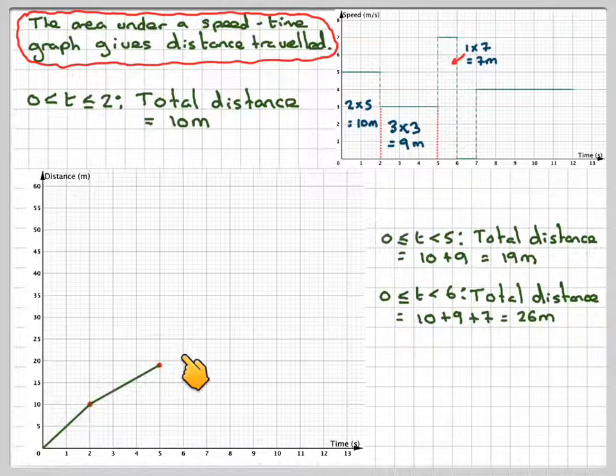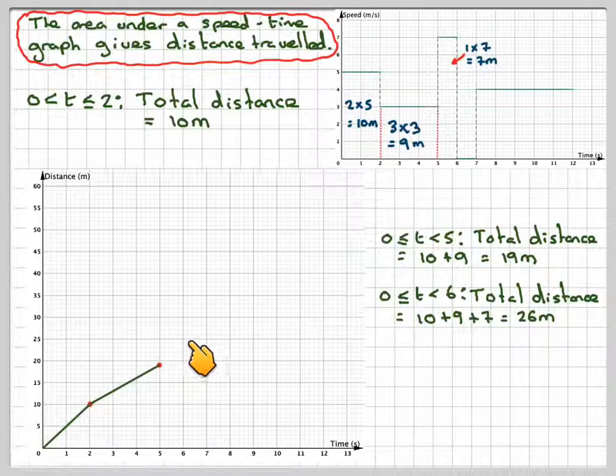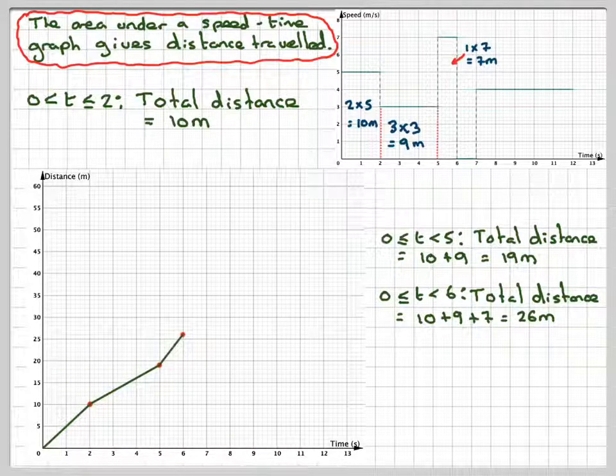So we're going to now need to put here at t=6 a mark at 26 and join that up with a straight line.